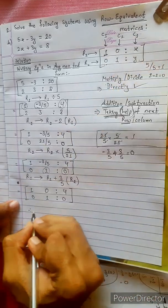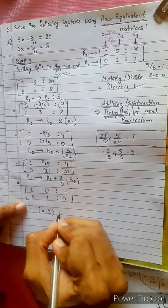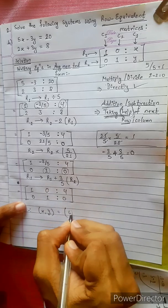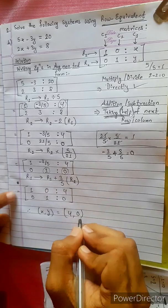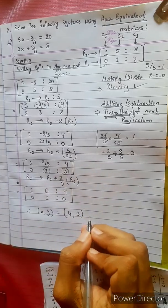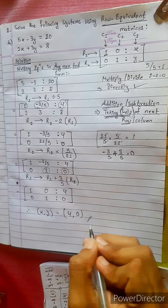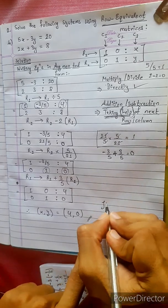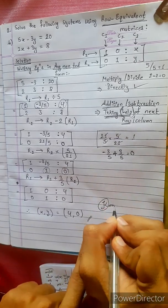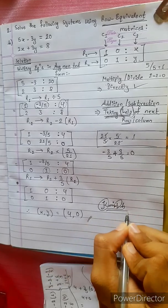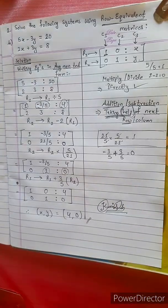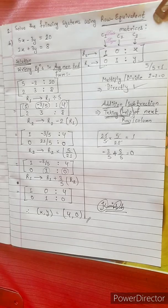Therefore, x comma y equals 4 comma 0. However, the speaker notes this answer is wrong and corrects themselves, indicating an error was made in the computation.